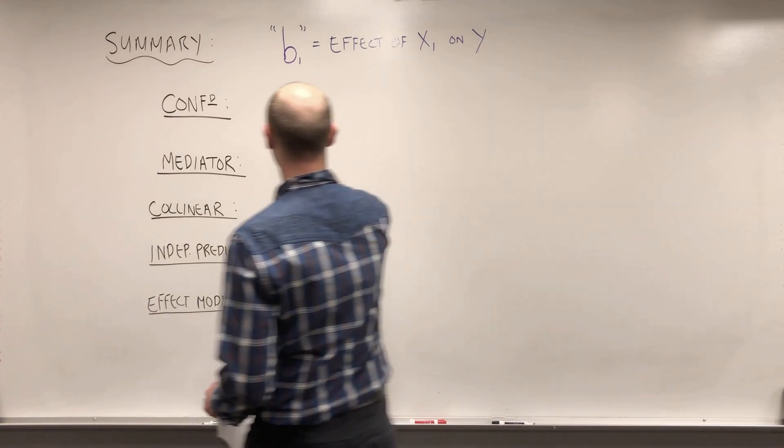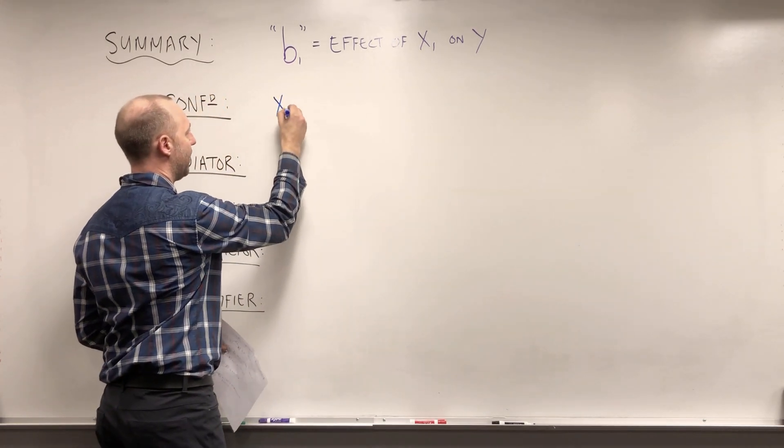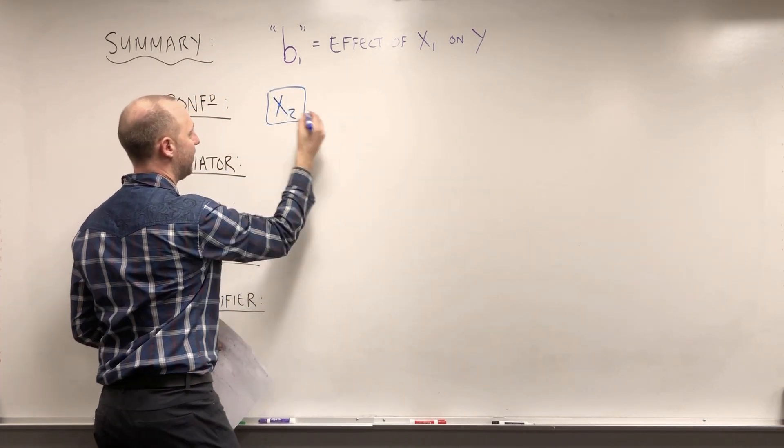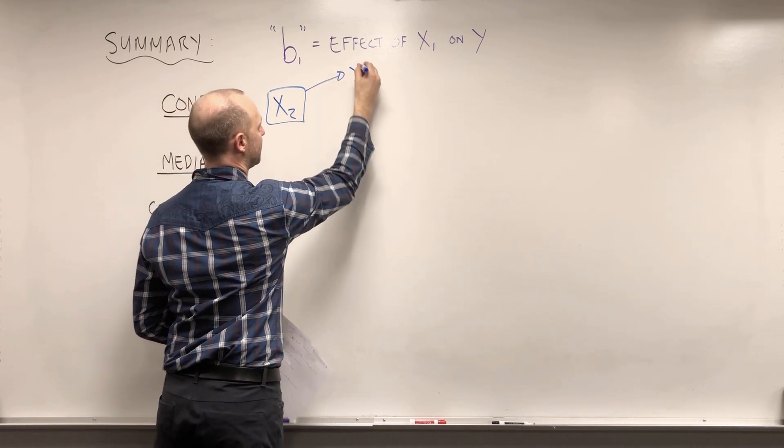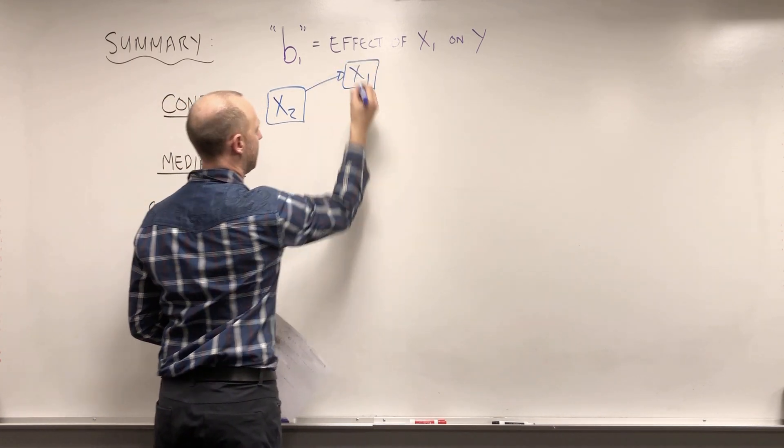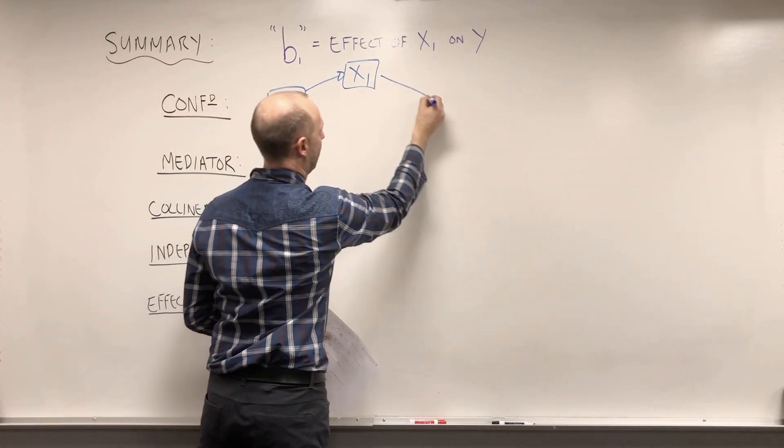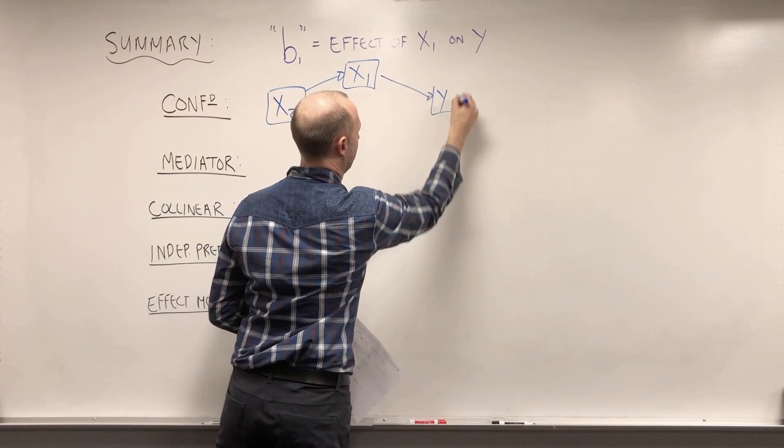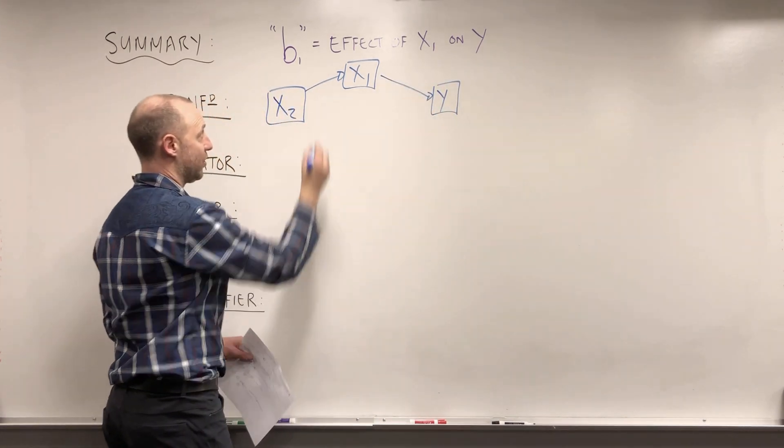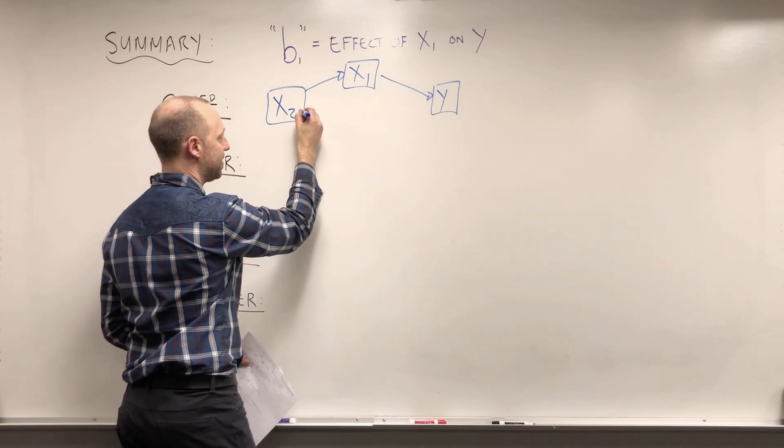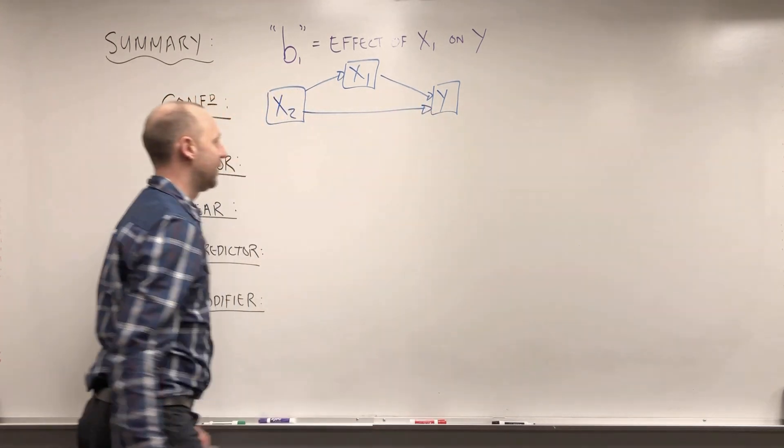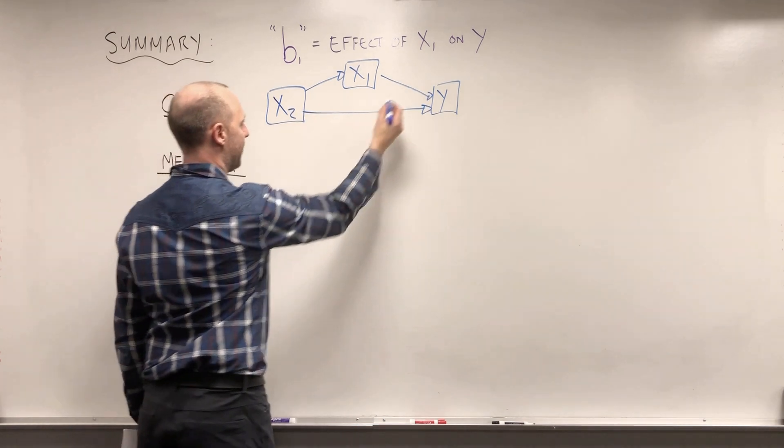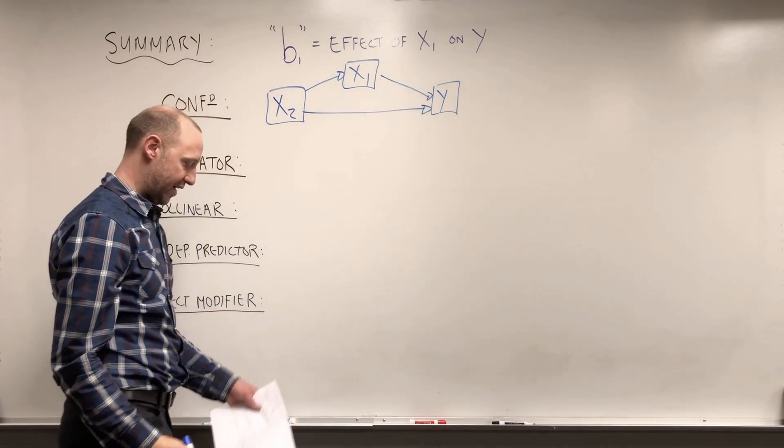So confounder looked like this where we have some other variable X2, the confounder. That variable is associated with X1. The effect that X1 has on Y, that's our question of interest, right? That's what we want to estimate. And we said that if we don't account for X2, X1 and X2's effects are stuck together.